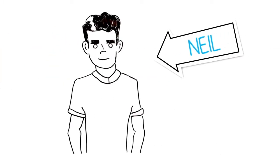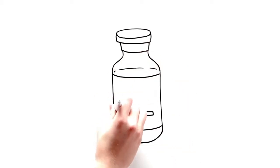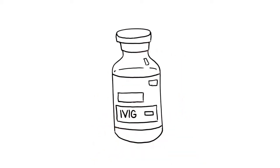Meet Neil. He was born without a properly functioning immune system, a condition known as primary immunodeficiency. Throughout his life, Neil will need regular doses of intravenous immunoglobulin, or IVIG, to boost his immune system and prevent infection.